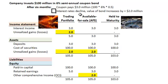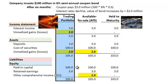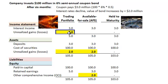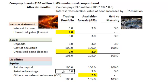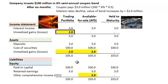What's different is the treatment of the $2 million price increase when interest rates decline. Under the trading portfolio classification, this is the only classification of the three in which the unrealized gain is recognized on the income statement — that's the plus $2 million. It grows assets under unrealized gain and also grows retained earnings, so the total increase to retained earnings is $5 million — the $3 million coupon plus the $2 million unrealized gain.